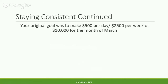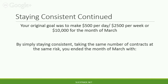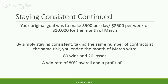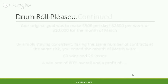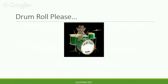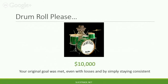Your original goal was to make $500 per day, $2,500 per week, or $10,000 for the month of March. Again, you want to look at the long term, not just daily. By simply staying consistent and taking the same number of contracts at the same risk, you ended the month of March with 80 wins and 20 losses — a win rate of 80% overall and a profit of $10,000. Your original goal was met even with losses, but by simply staying consistent.